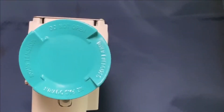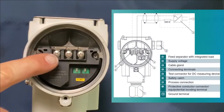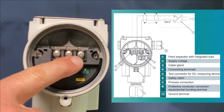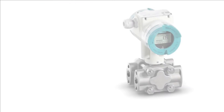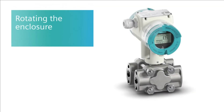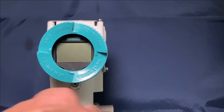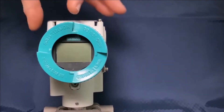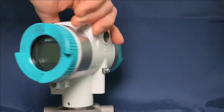Now we have a look at the electrical terminal compartment. Here we have the connecting terminals for earthing and the power supply. At the bottom right there is a test connector where you can measure the loop current. After opening the retaining screw you have the possibility to rotate the enclosure by 360 degrees.